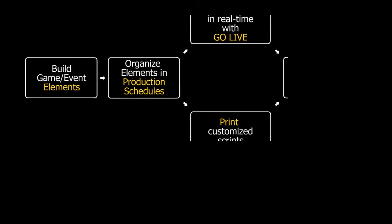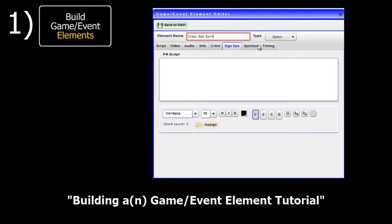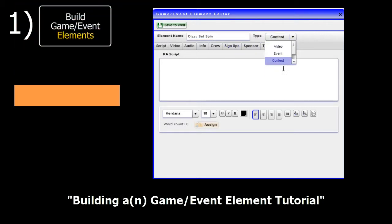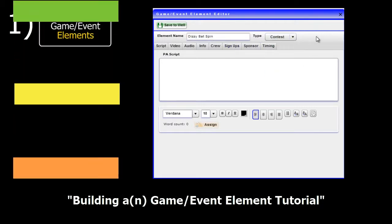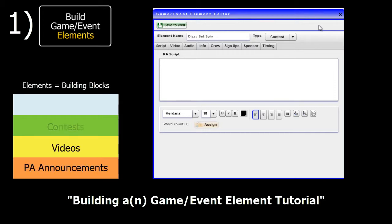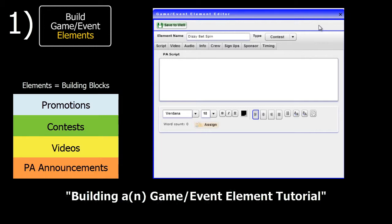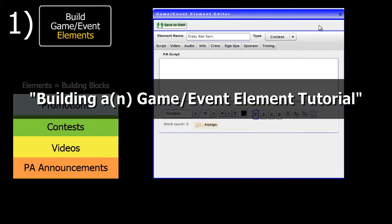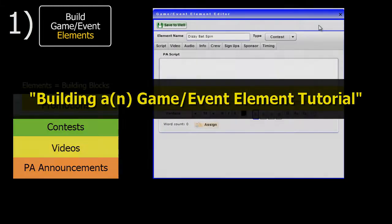The first step in the process is to build the different elements to your events. These are the configurable building blocks to each segment within the event. Examples include PA announcements, videos, contests, promotions, and more. They are built based on how you operate your events and how your facility is set up. Follow along the building a game/event element tutorial to learn more.